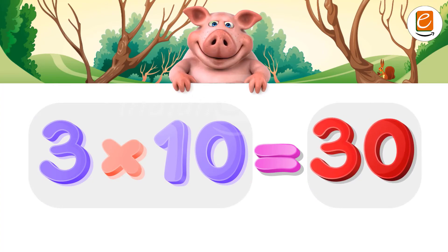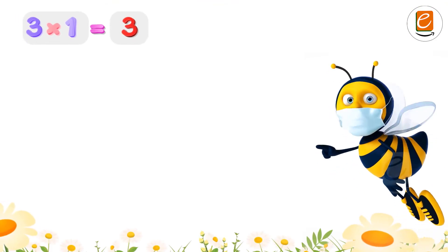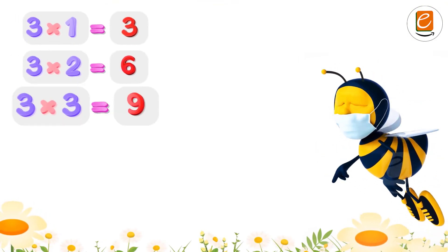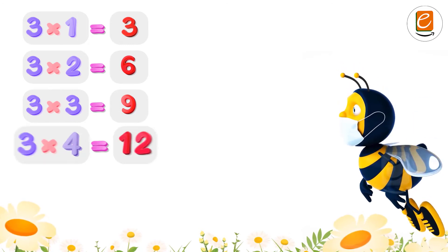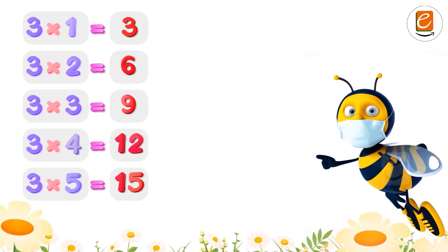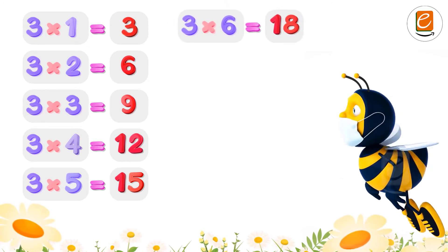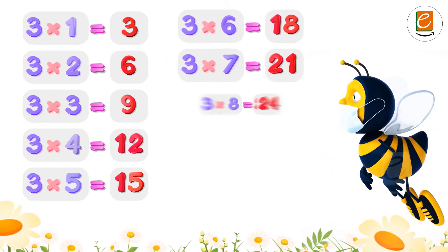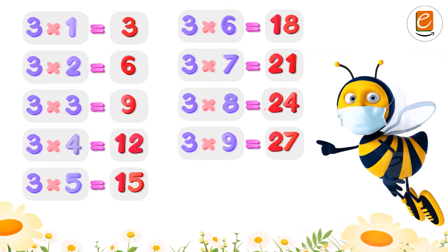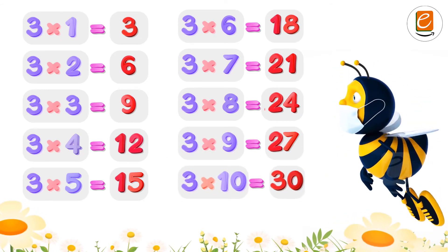Now let's repeat. Three ones are three. Three twos are six. Three threes are nine. Three fours are twelve. Three fives are fifteen. Three sixes are eighteen. Three sevens are twenty-one. Three eights are twenty-four. Three nines are twenty-seven. Three tens are thirty.